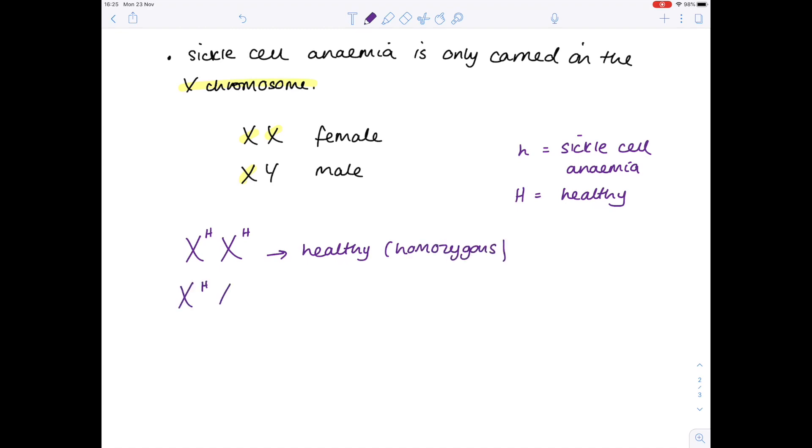This person will also be healthy. And that's because sickle cell anemia is a recessive disease. We can also see that they are heterozygous because they have one uppercase H and one lowercase. The final combination for females is two lowercase Hs. This person unfortunately has sickle cell anemia because they have two copies of that recessive allele. And all the time, we're very interested in what's going on here, here and here.